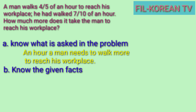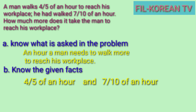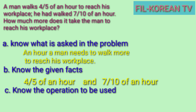Next, identify the given facts — the data you need to solve the problem. Focus on the numbers: four fifths of an hour and seven tenths of an hour. After analyzing, you need to plan what operation to use. To determine the operation, look for the clue word in the problem. The clue word found in the question is 'how much more.'